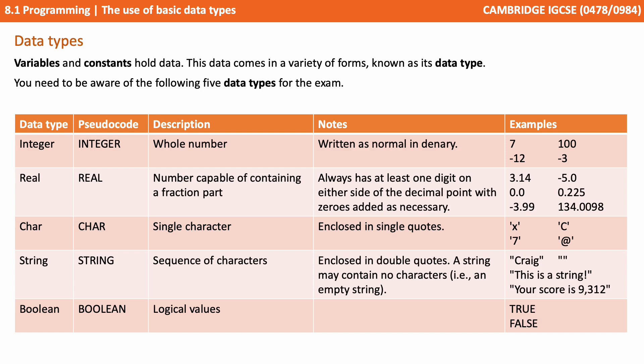We then have the char data type, which holds a single character. And we have the string data type, which can hold a sequence of characters. And finally, we have the boolean data type, which can store the logical values either true or false.